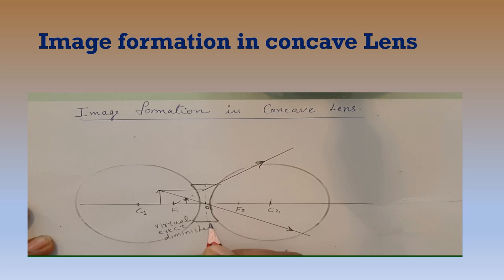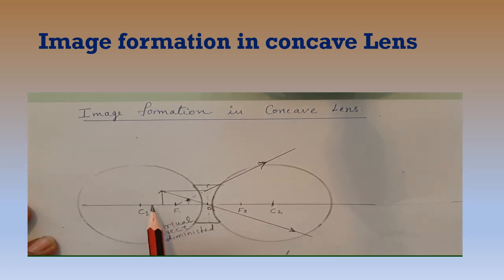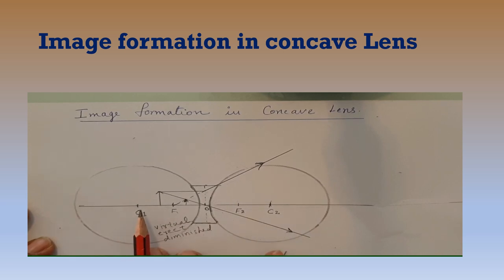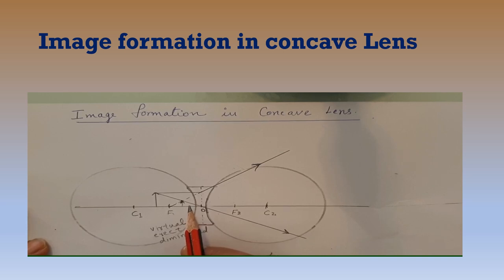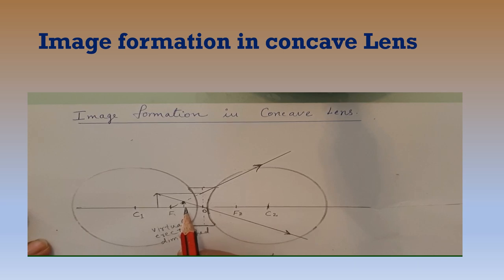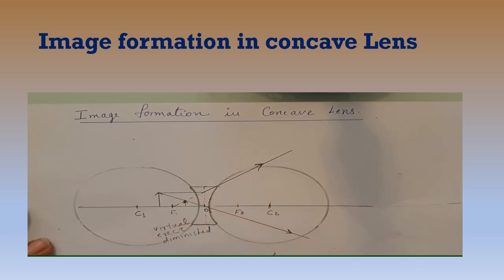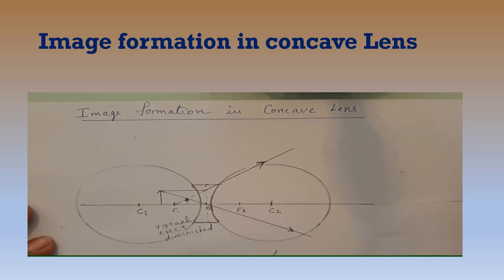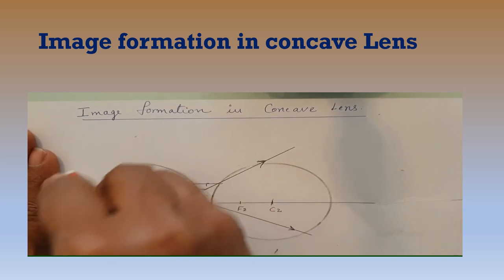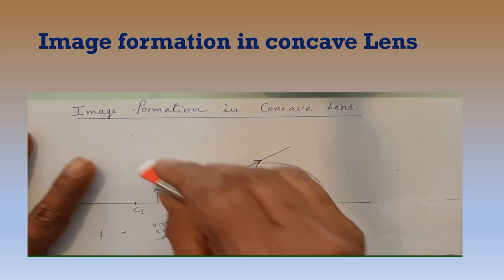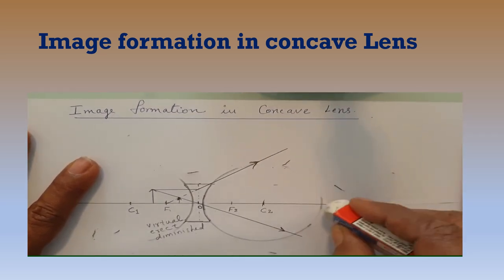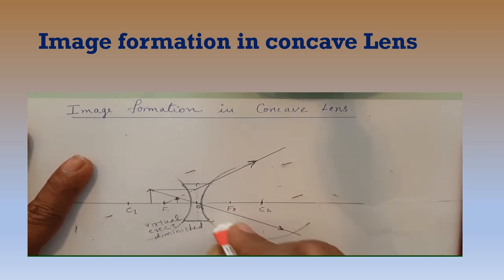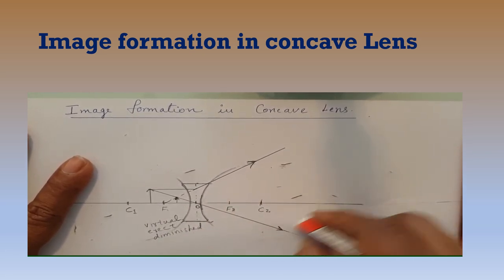This is the image formation in concave lens. If you keep the object anywhere on this line — at infinity, or between F and C, or anywhere — you always get the same type of image: virtual, erect, and diminished. And that image will be formed between the focus and the optic center. For the exam, rub out the circles and make the drawing neat. Neatly drawn diagrams get more marks from teachers.